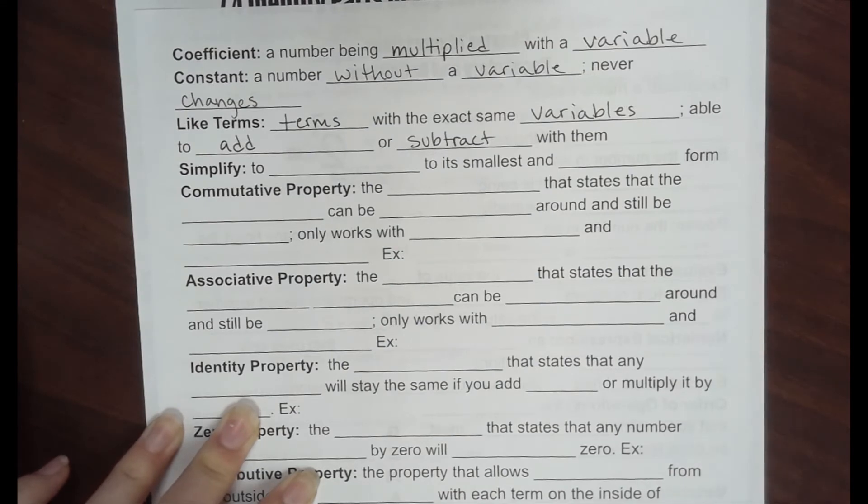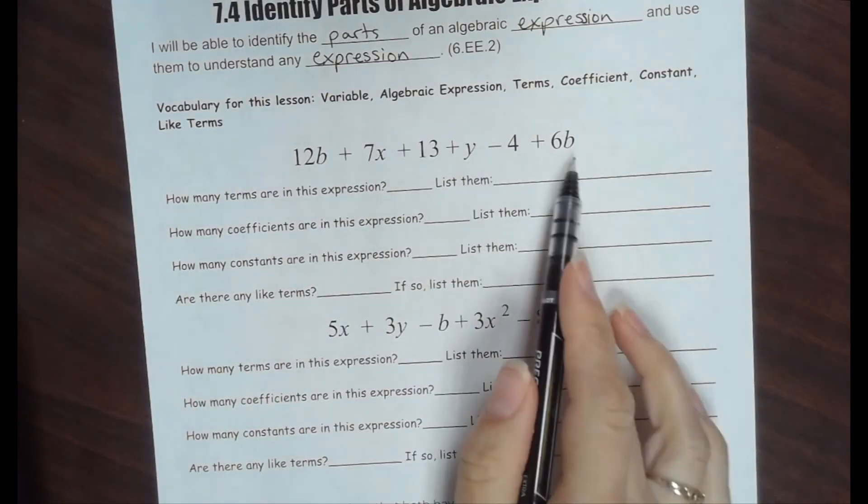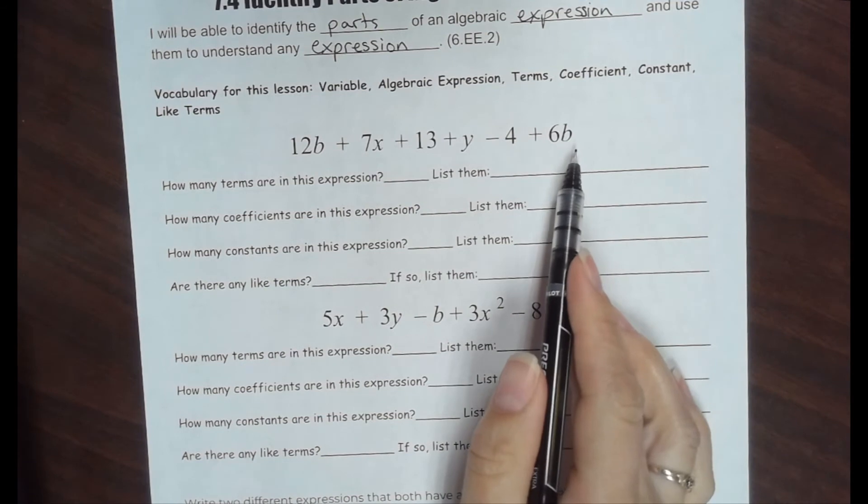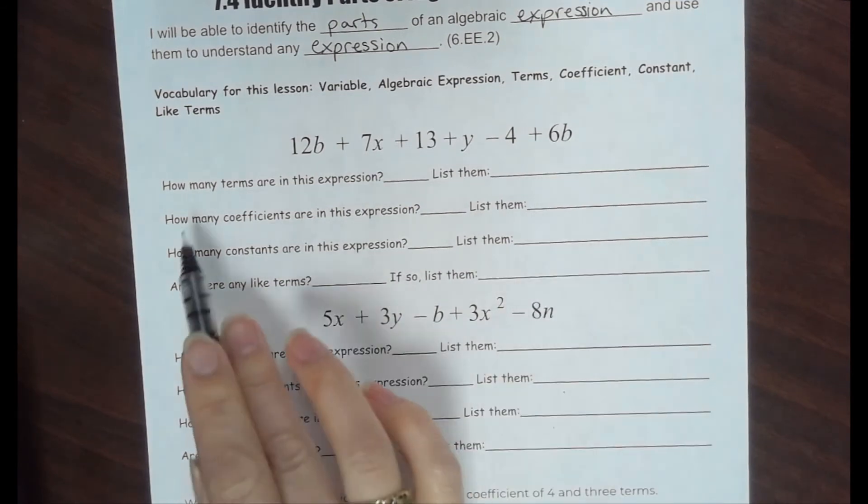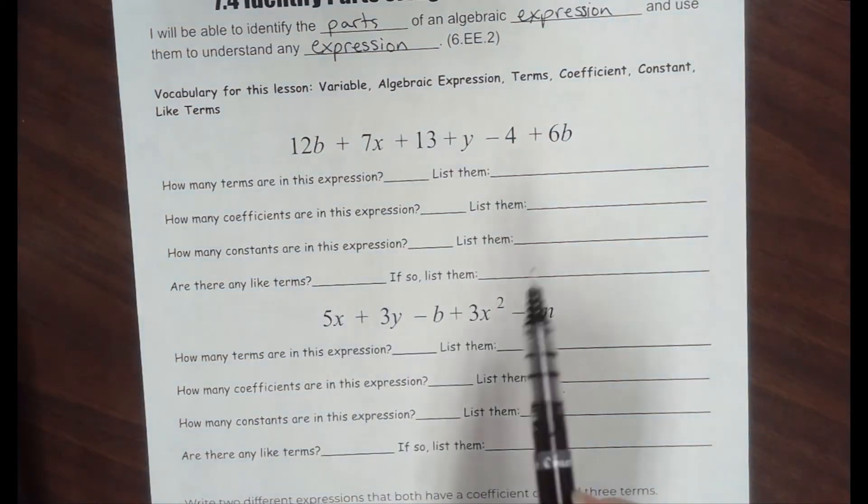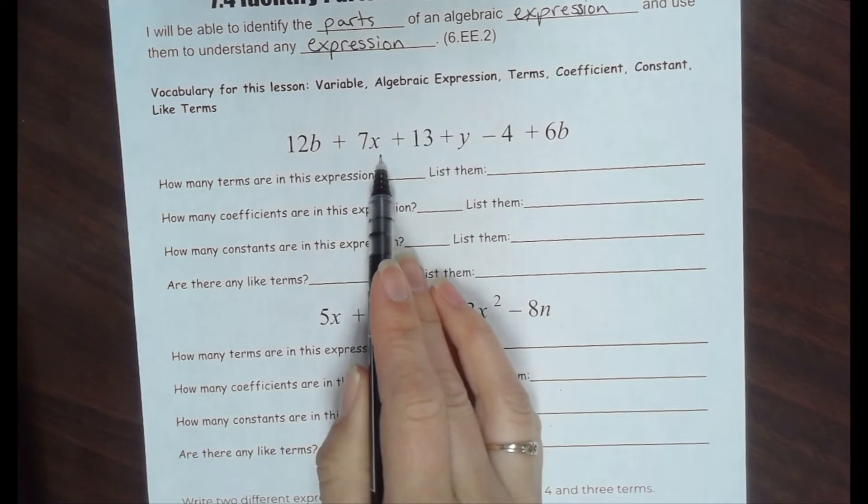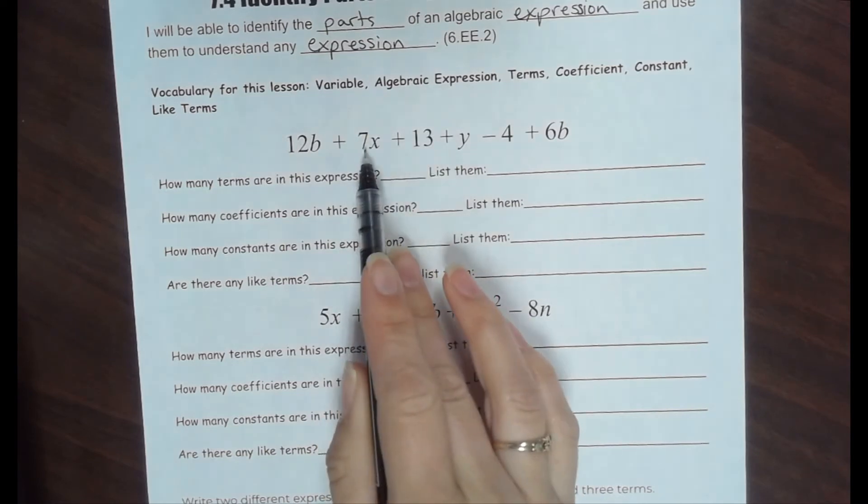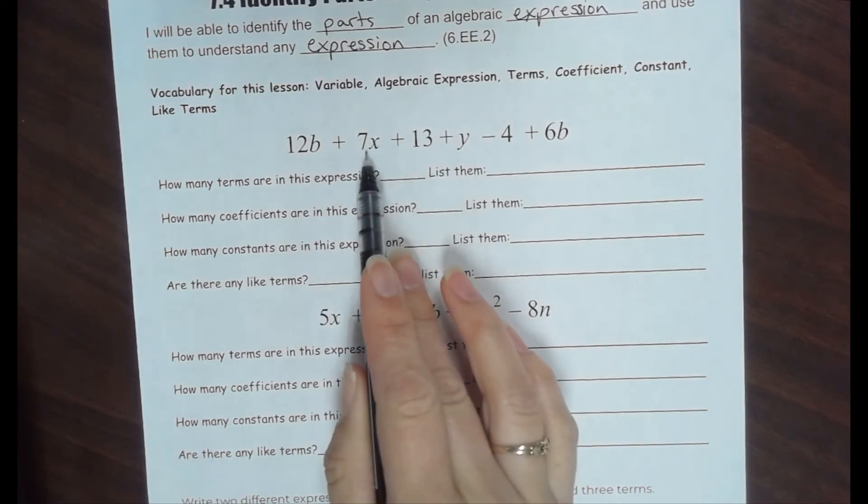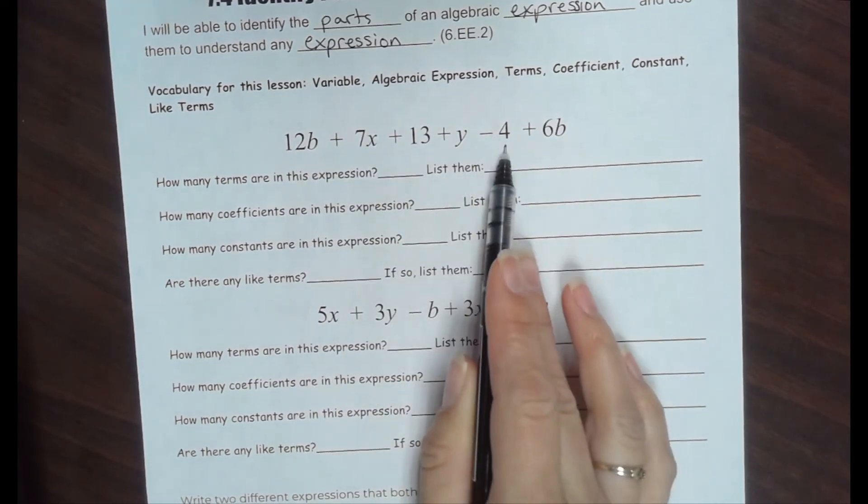So knowing that, let's go back and look at an algebraic expression. Here's a very long one. If I were looking for terms, how many terms are in this expression? Remember, a term is anything separated by plus or minus signs. Here, there's 1, 2. See how 12b and 7x are separated by a plus sign? 1, 2, 3, 4, 5, 6.